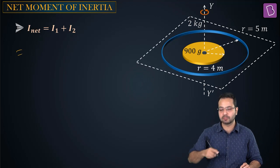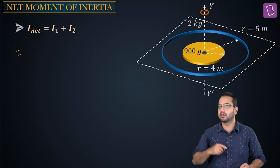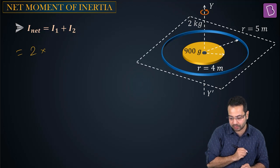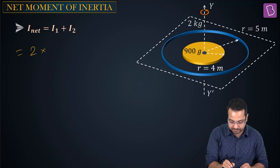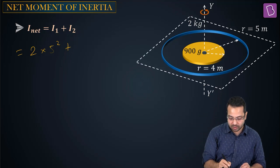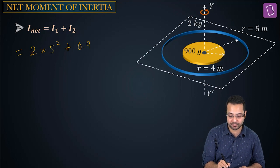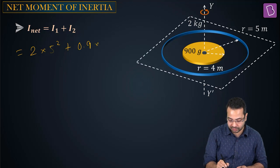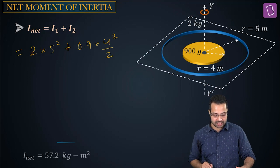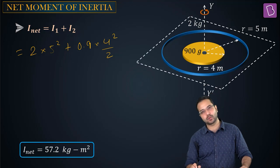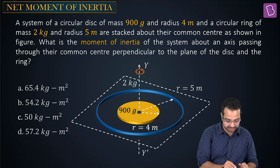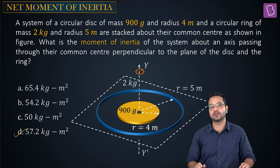Moment of inertia of the ring: MR² = 2 × 5² = 50 kg·m². Moment of inertia of the disc: MR²/2 = 0.9 × 4²/2 = 7.2 kg·m². Total = 50 + 7.2 = 57.2 kg·m². The correct answer is option D, 57.2 kg·m².